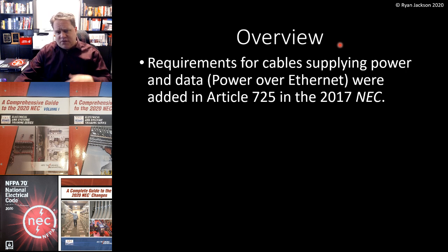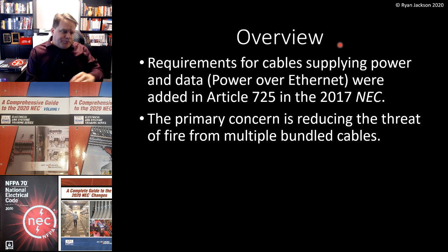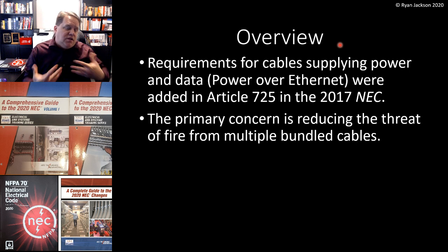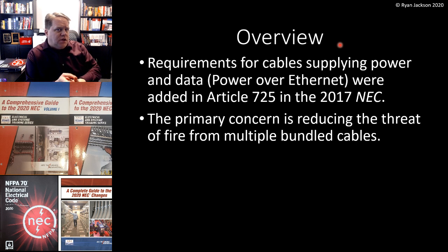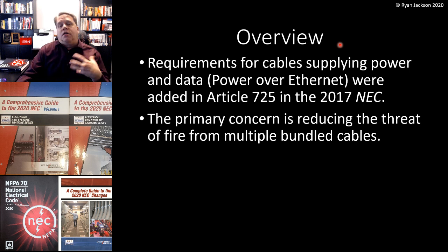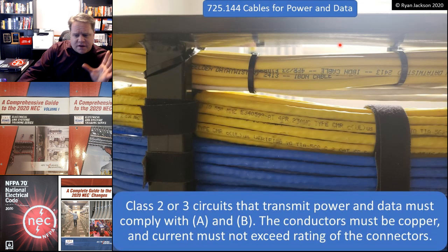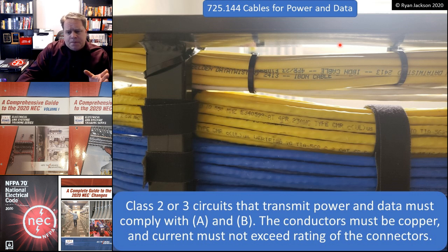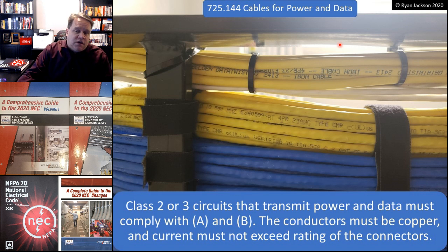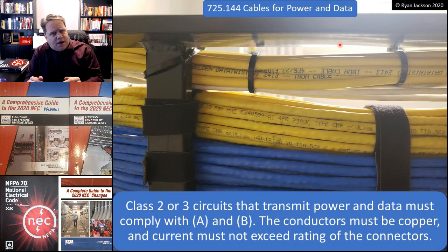We added these rules in the 2017 NEC because of power over Ethernet, and mainly power over Ethernet lighting, which is becoming fairly popular. The primary concern for why we had to add this in the NEC is that it's low voltage and low current. If it's limited in power, voltage, and current, why are we so concerned? The main issue is reducing the threat of fire that can arise from multiple bundled cables. Section 725.144 is where we begin — cables for power and data. Class 2 or class 3 circuits that transmit both power and data must comply with A and B. The conductors have to be copper, and the current must not exceed the rating of the connectors.